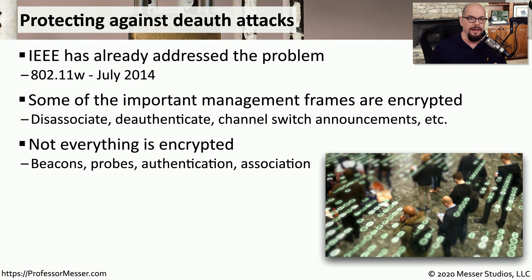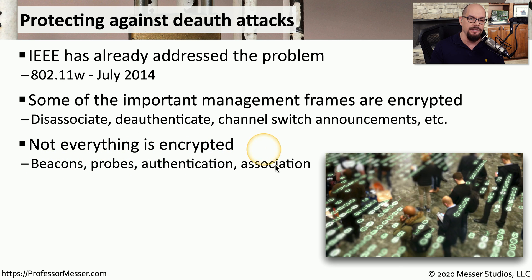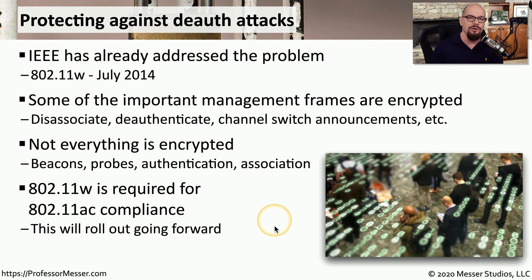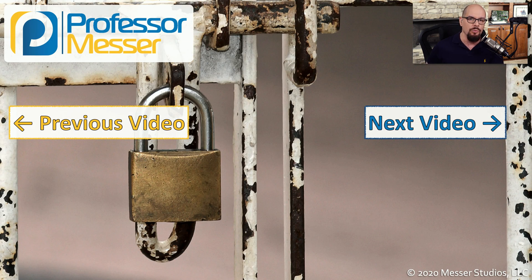Not all management frames will be encrypted. Certain management frames have to remain unencrypted so that you're able to first connect to the device — frames such as beacons, probes, authentication, and association frames are still sent in the clear. This 802.11w update was rolled into the 802.11ac standard, so if you're running 802.11ac or a later version of 802.11, this protection is already in your access point, and an attacker would not be able to use a disassociation or de-authentication attack to remove you from your wireless network.